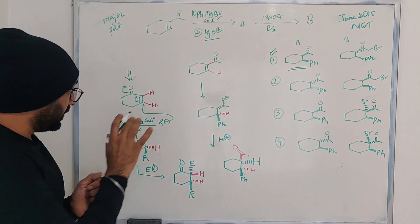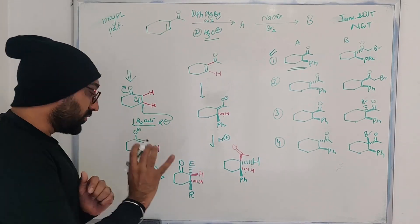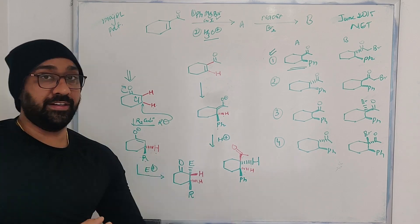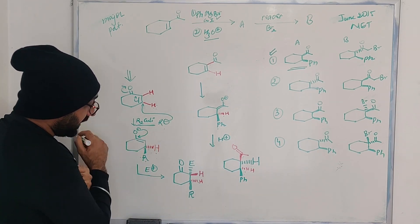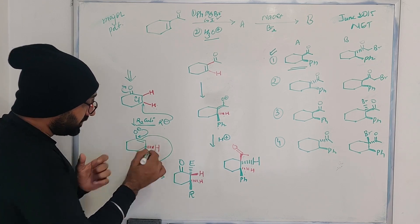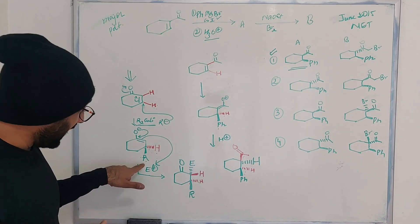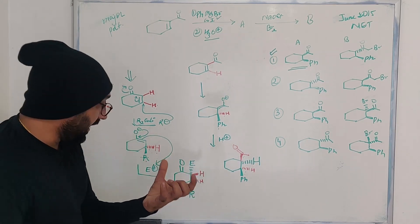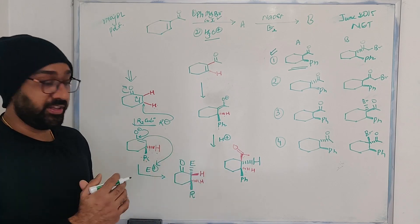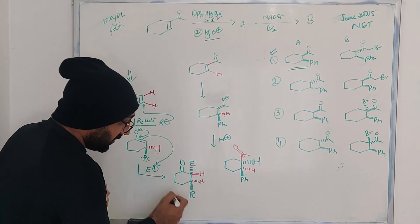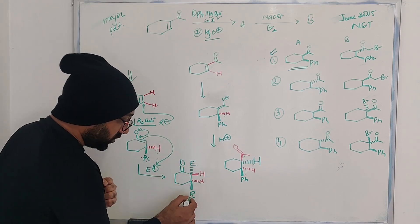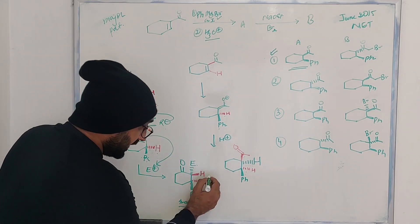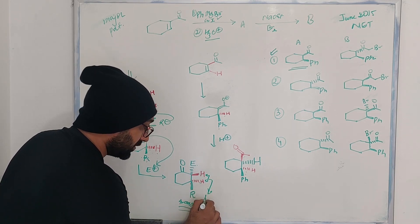Whenever we react with Gilman reagent or organocuprates we know that it is going to attack in a conjugate manner. R - let us suppose this R is approaching from the top face. Since this is coming from the top face, this hydrogen here is going to go behind the plane. When we do this electrophile sequence, the electrophile is going to attack the front face so that the R group is buried.